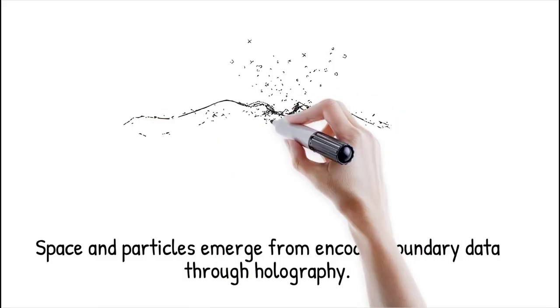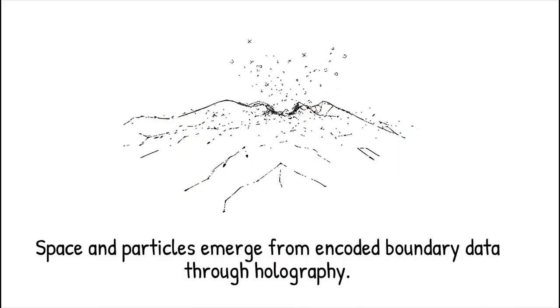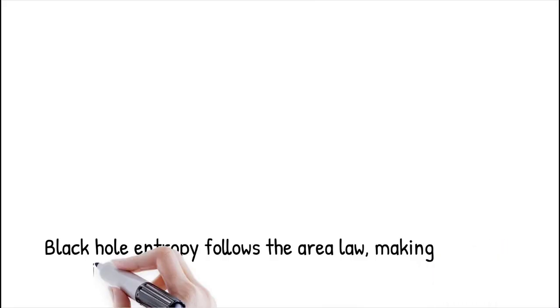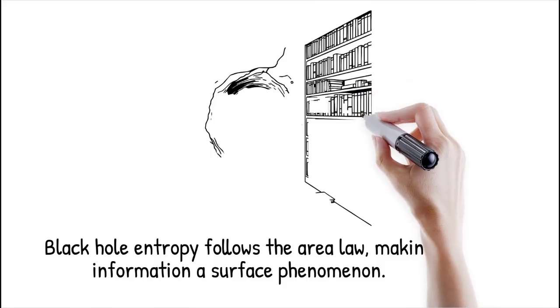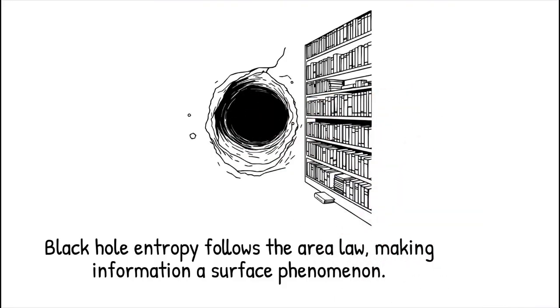Consequently, what we perceive as lifelike structures are mere shadows projected inward from the cosmic edge. The area law for black hole entropy, S = A/4Lp², suggests that information is fundamentally a surface phenomenon - like reading only the cover of every book in a library, yet somehow reconstructing their entire contents as an immersive virtual library.